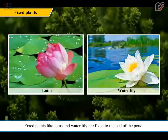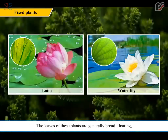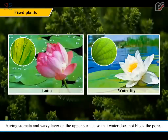Fixed plants like lotus and water lily are fixed to the bed of the pond. These plants have long stems which are hollow and light. The leaves of these plants are generally broad, with stomata and a waxy layer on the upper surface so that water does not block the pores.